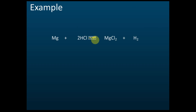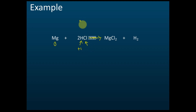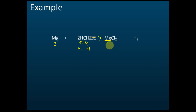Let's look at this example. Magnesium here has an oxidation number of zero because it is a neutral element. Hydrogen is positive one — hydrogen is always positive one. For chlorine, we don't know, so: positive one plus x equals zero, giving x equals negative one. Then for this magnesium in the product, it is positive two because this is an ionic compound and the charge of Mg is 2+.